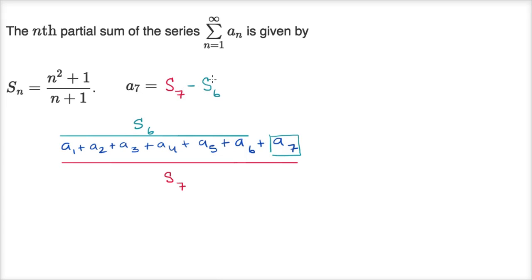Well, what is this going to be? S sub seven, the sum of the first seven terms, we just, wherever we see an n, we replace it with a seven. So it's going to be seven squared plus one over seven plus one. And from that, we are going to subtract S sub six, the sum of the first six terms. That's going to be six squared plus one over six plus one.